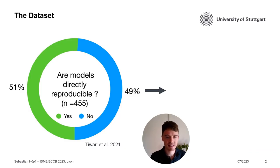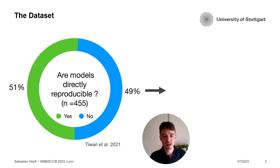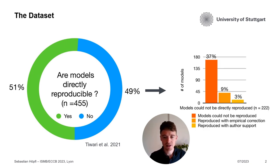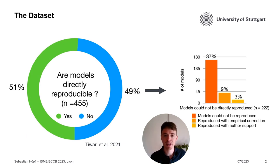Here is the dataset we investigated. It's from Tivari et al., and they investigated 455 models in Systems Biology. From these, only every second was directly reproducible. From the 49% of models which were not directly reproducible, they also tried to make empirical corrections and tried to contact the authors. Even with these measures, they were not able to reproduce 37% of the models — so they were not reproducible at all.